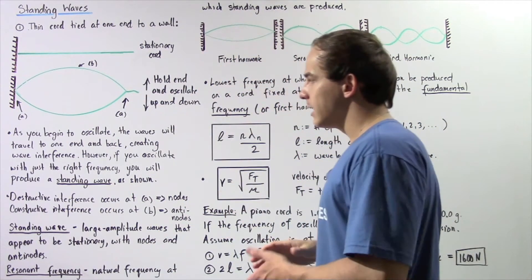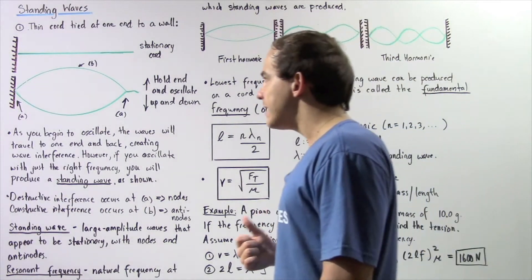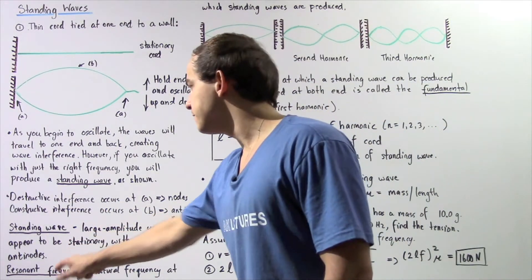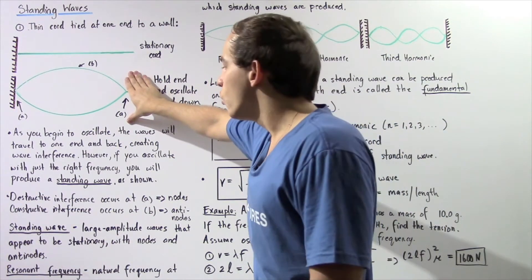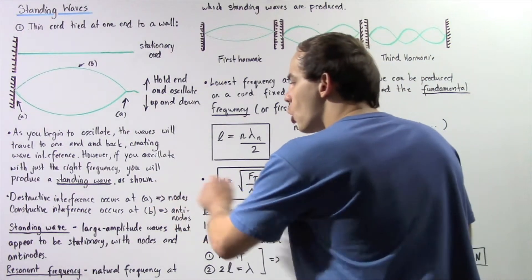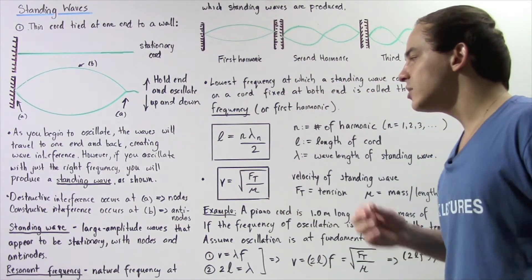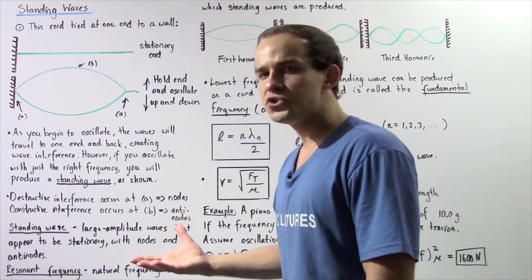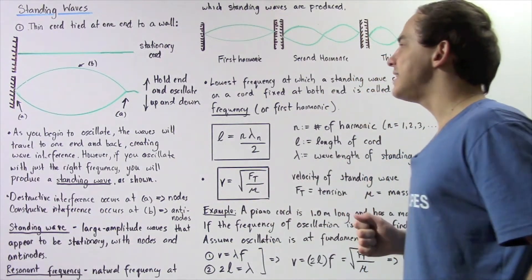So once again, as you begin to oscillate, the waves travel to one end and back, creating wave interference — a jumble of waves. However, if you oscillate the cord with just the right frequency, known as the resonant frequency, you produce a standing wave. This standing wave has nodes where destructive interference takes place and antinodes where constructive interference occurs. A standing wave is essentially a large-amplitude wave that appears stationary and has regions called nodes and antinodes, produced by resonant frequencies.